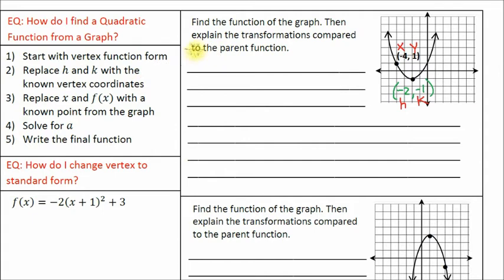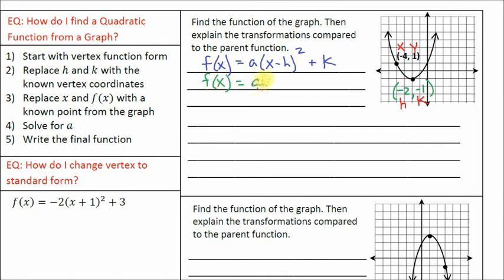Step one: start with vertex function form. F of x equals a times the quantity x minus h, squared, plus k. Step two: replace h and k with the known vertex coordinates. We rewrite the equation replacing h and k. H is negative 2, so we get a negative negative 2, which is positive 2 — remember, you flip the sign of h. The k value is negative 1, and you keep the sign of k.